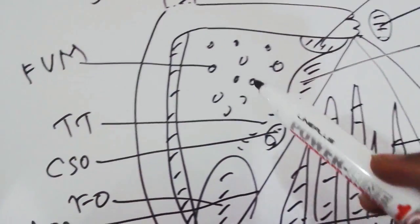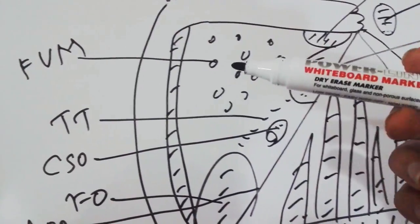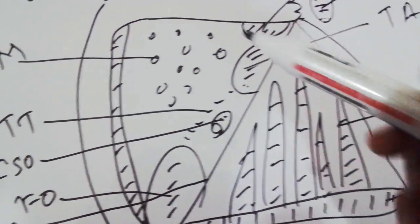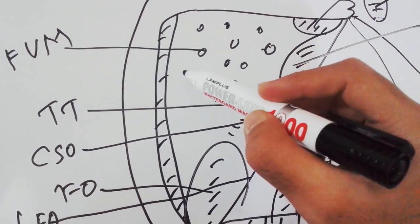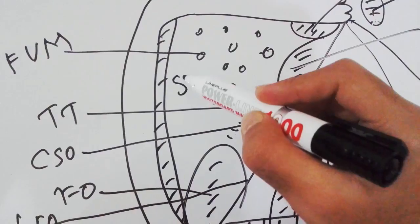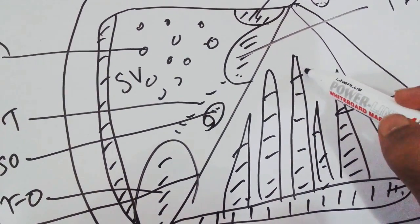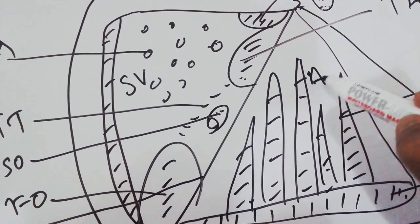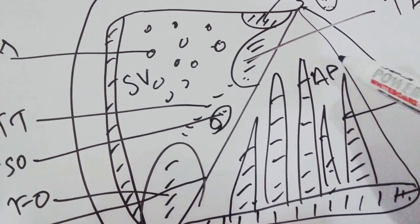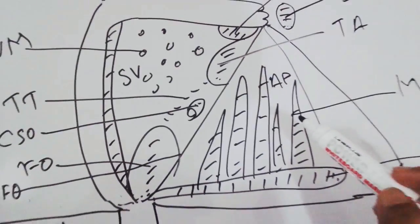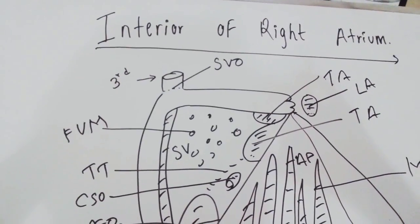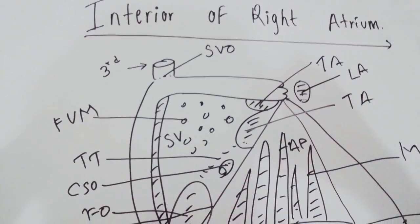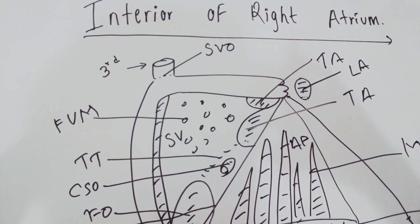In summary, the right atrium consists of a posteriorly smooth part and an anteriorly rough part. The posteriorly smooth part is called sinus venarum and the anterior rough part is called atrium proper. This is the overview of the interior of the right atrium.